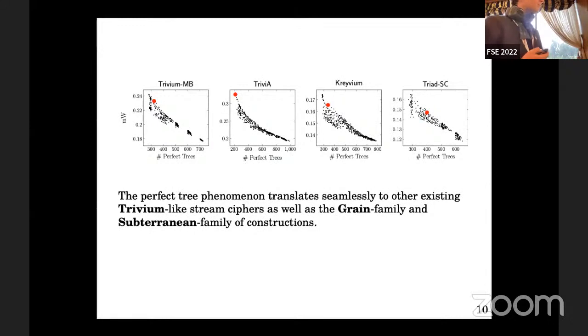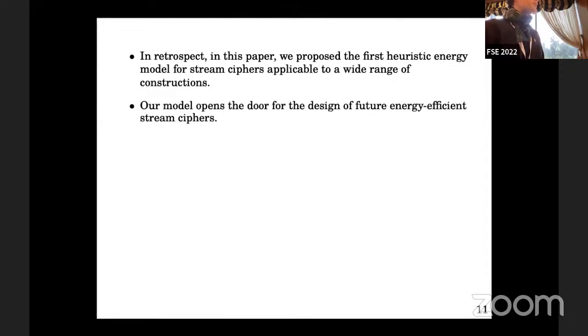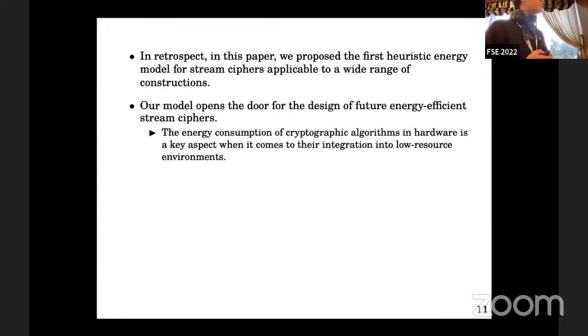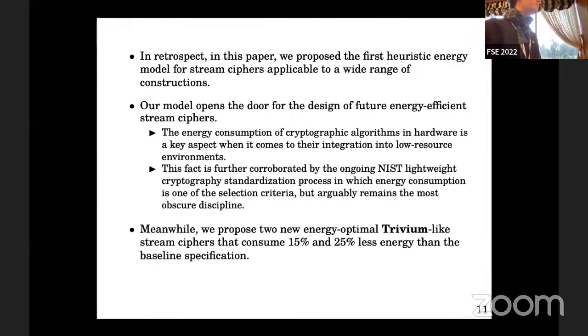Our model naturally extends to other existing Trivium-like ciphers and similarly to the Grain and Subterranean family designs. In retrospect, in this paper we proposed the first heuristic energy model for stream ciphers applicable to a wide range of constructions. Our model opens the door for future energy-efficient stream cipher designs. Energy consumption of cryptographic algorithms in hardware is a key aspect for integration into low-resource environments, further supported by the NIST lightweight standardization process where energy consumption is one of the selection criteria. Our two new constructions reduce energy consumption by 15% and 25% respectively.